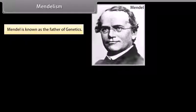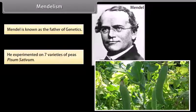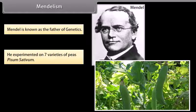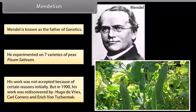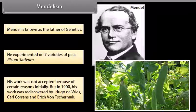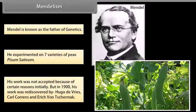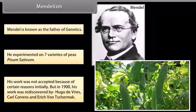Mendel is known as the father of genetics. He experimented on seven varieties of peas, Pisum sativum. His work was not accepted because of certain reasons initially. But in 1900, his work was rediscovered by Hugo de Vries, Karl Correns, and Erich von Tschermak.